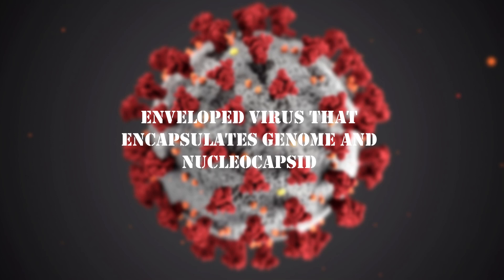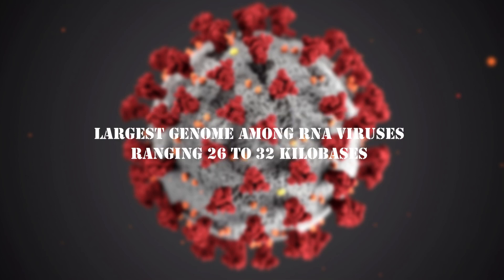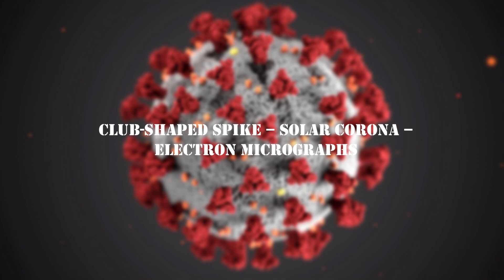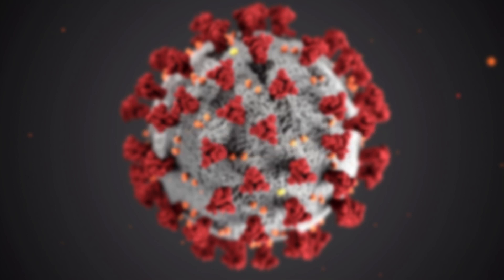The genome size is the largest among RNA viruses, ranging from 26 to 32 kilobases. Their characteristic club-shaped spikes that protrude from the surface give an image reminiscent of the solar corona in electron micrographs, hence they acquired the name corona. These viruses affect both mammals and birds.